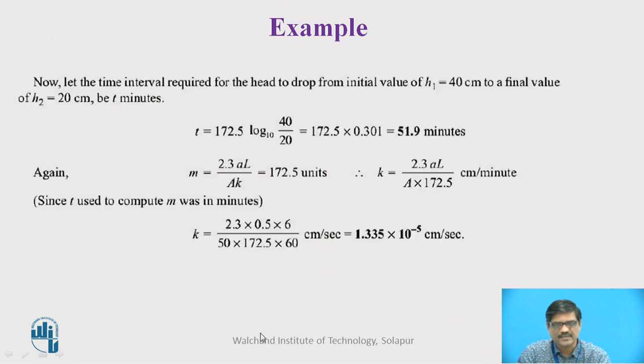After getting this particular interval, the time interval required for the head to drop from the initial value of 40 centimeter to a final value of 20 centimeter, we can use this equation. A constant M is again replaced here. Ultimately, we find the K value as 1.335 into 10 raise to minus 5 centimeter per second.